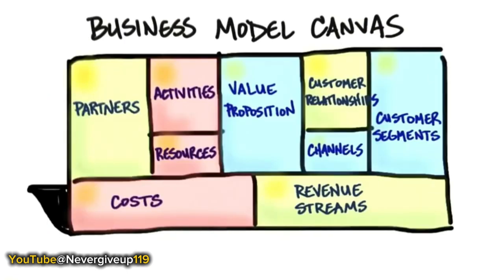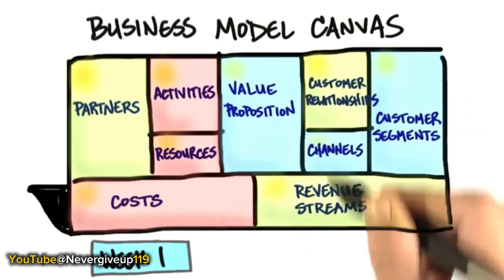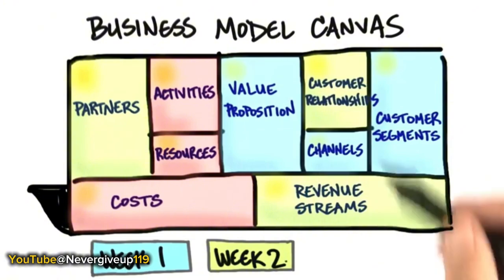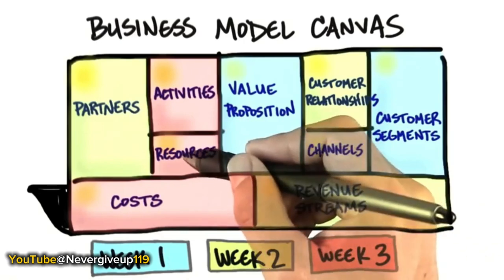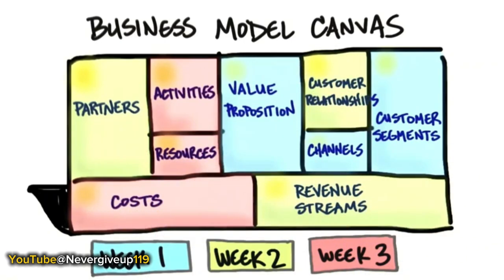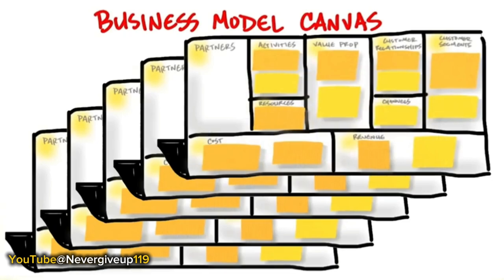Just as a reminder, what the teams will be starting with in week one is filling out the business model canvas and getting out of the building to test their hypotheses about the value proposition, customer segments, and channel. In the next week, they'll be testing customer relationships, revenue streams, and partners. And then in week three, they'll be looking at key resources, key activities, and cost structure. The goal is not to draw on the canvas — the goal is to get out of the building and use the canvas as a scorecard for the customer development activities going on in depth between each one of those canvas scorecards.